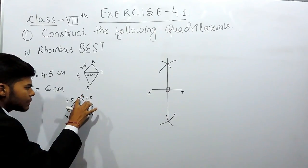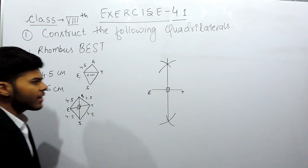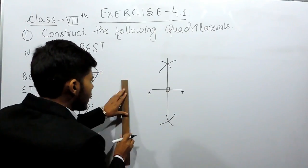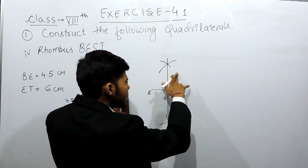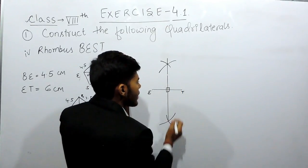So BT is cutting this BS at a distance of 4.5 cm. Now again in the ruler we will open the compass till 4.5 cm. We will put the compass here and we will cut an arc of 4.5 cm. So this is an arc of 4.5 cm.